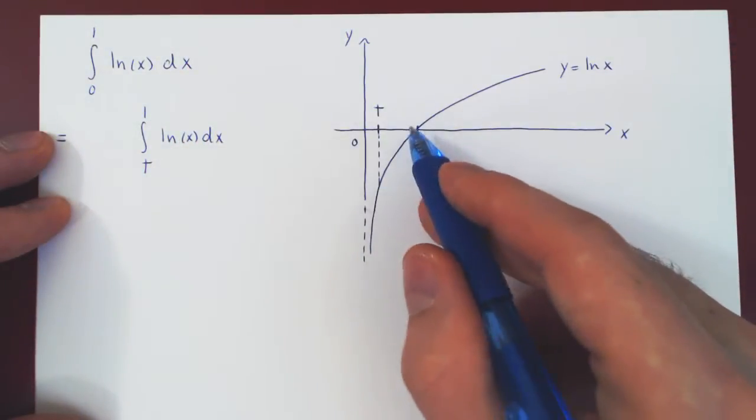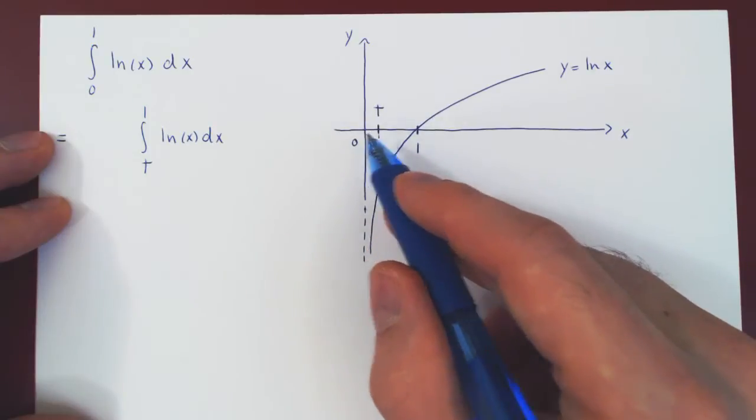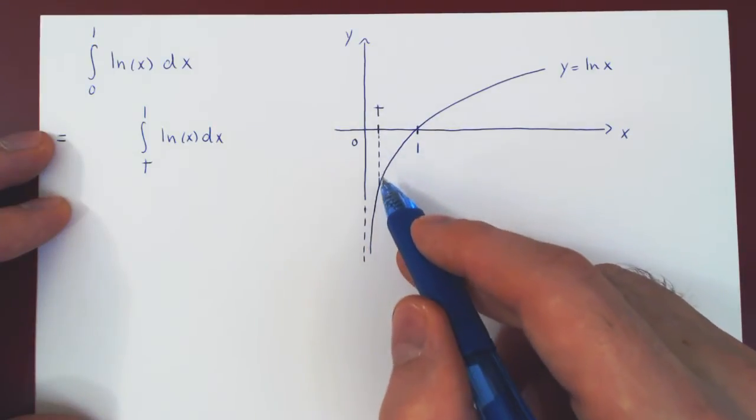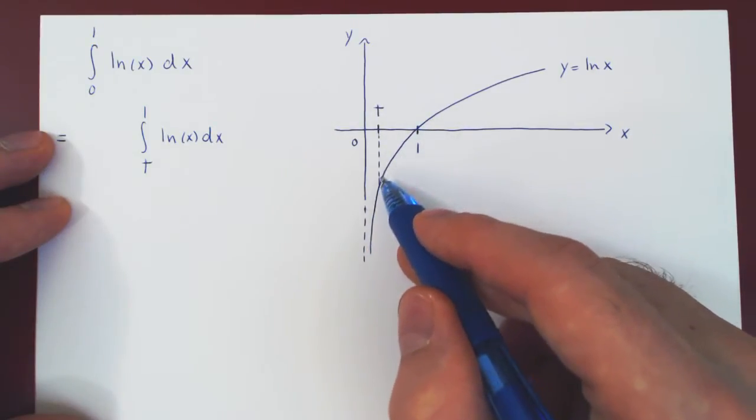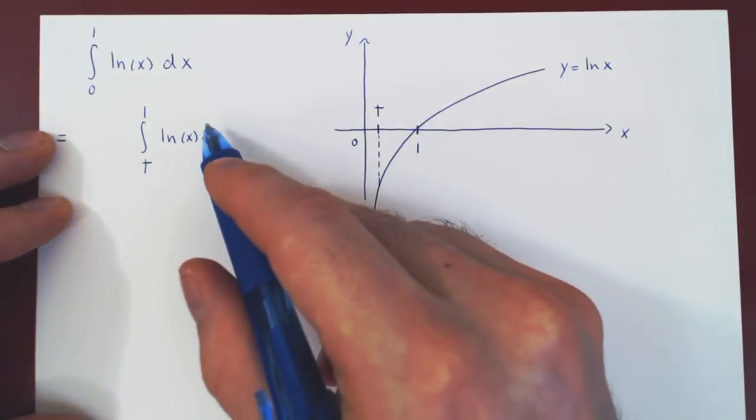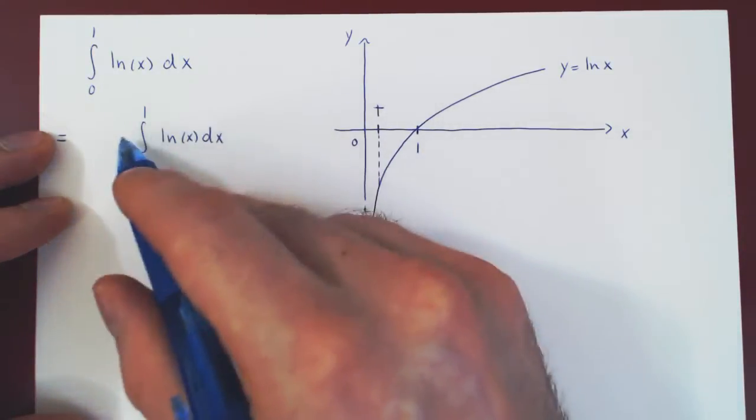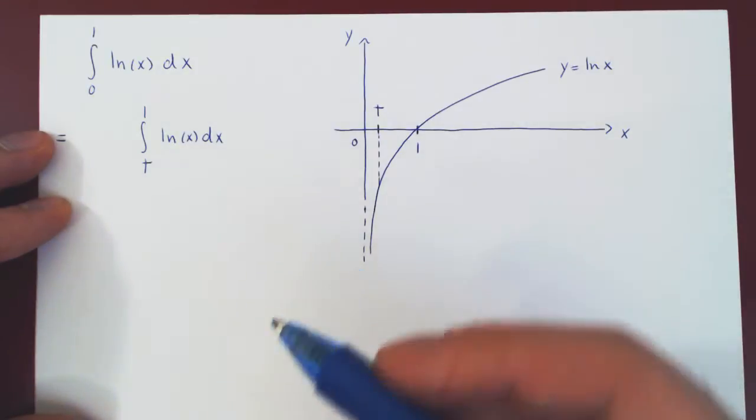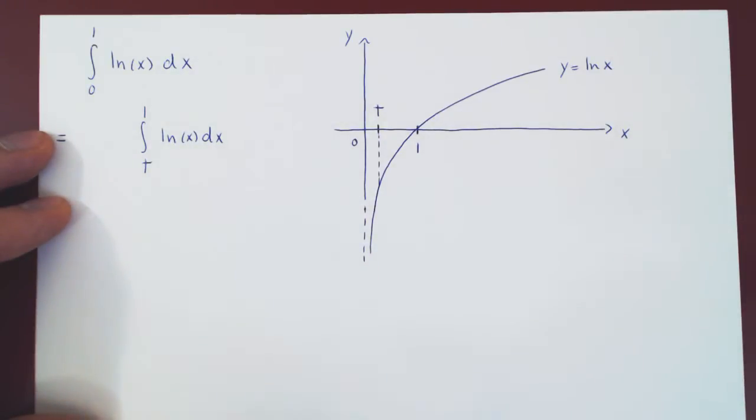And from t to 1, as long as t is strictly between 0 and 1, ln of x is clearly continuous, there is no break in the function. And so now we can evaluate this definite integral with the fundamental theorem of calculus, as the two conditions are satisfied.